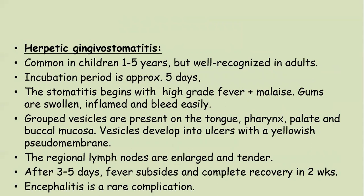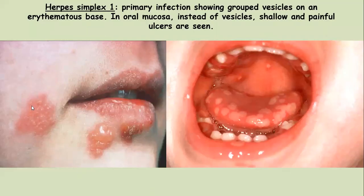Herpetic gingivostomatitis is common in children between one to five years but is also well recognized in adults. Incubation period is short — five days. Stomatitis begins with high-grade fever, malaise, swollen gums that are inflamed and bleed easily. We see grouped vesicles on the tongue, pharynx, palate and buccal mucosa. Vesicles develop into shallow ulcers with yellow pseudomembranes. If you see the patient in the ulcerated stage, the ulcers will also be seen in a grouped fashion, which is diagnostic. Regional lymph nodes are enlarged and tender, and after three to five days fever subsides with complete recovery in two weeks. Encephalitis is a rare complication.